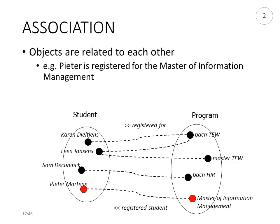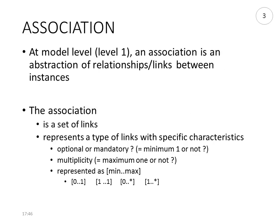Following the principle of abstraction, similar relationships need to be abstracted into a concept at a higher level, at a model level. So at a model level, what we call level 1, an association is an abstraction of relationships or links between objects or instances at level 0. The association is a class or a collection of objects — it's a set of links — and it also has a number of properties, representing a type of links with specific characteristics.